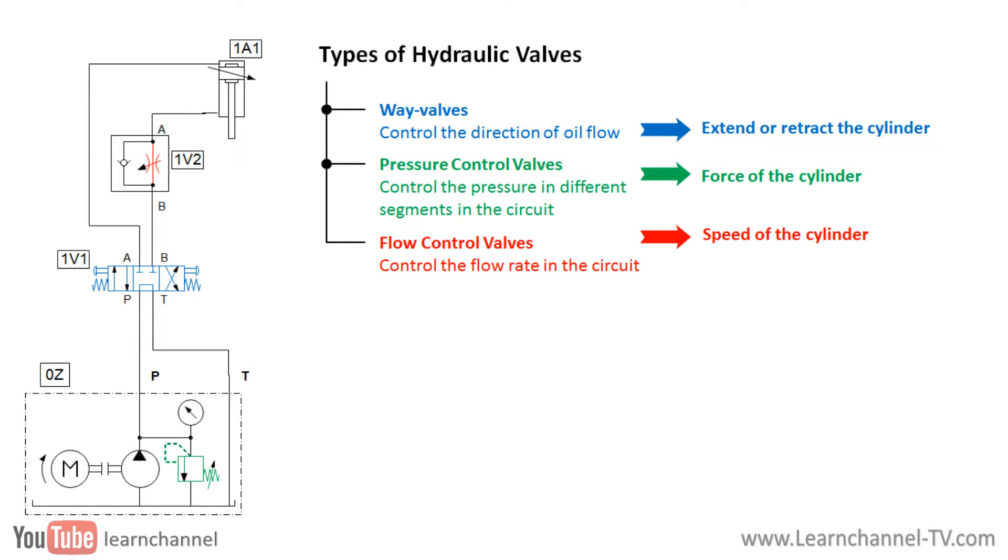Let us first consider this simple hydraulic circuit. The cylinder can be controlled by different valves to control the direction, force and speed. In general, it can be said that the flow control valves control the speed of a cylinder or the rotational speed of a hydraulic motor.